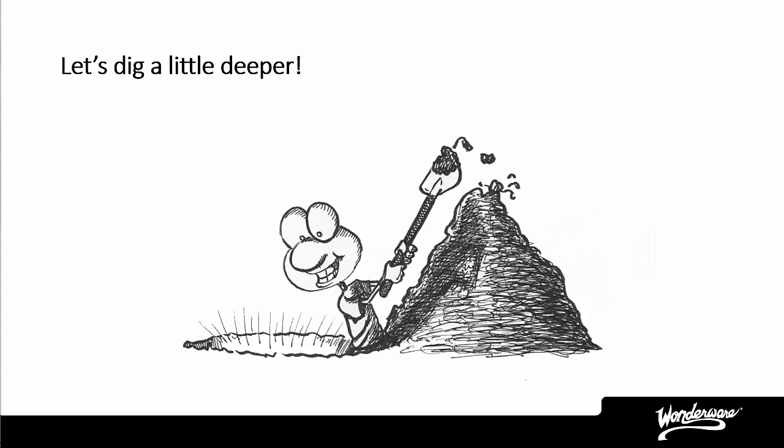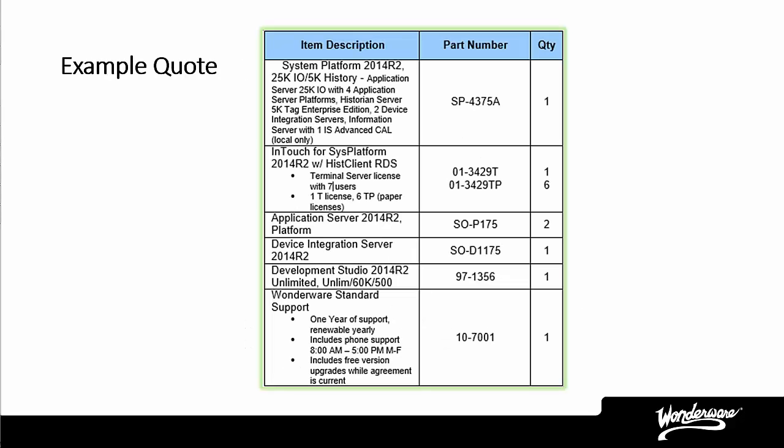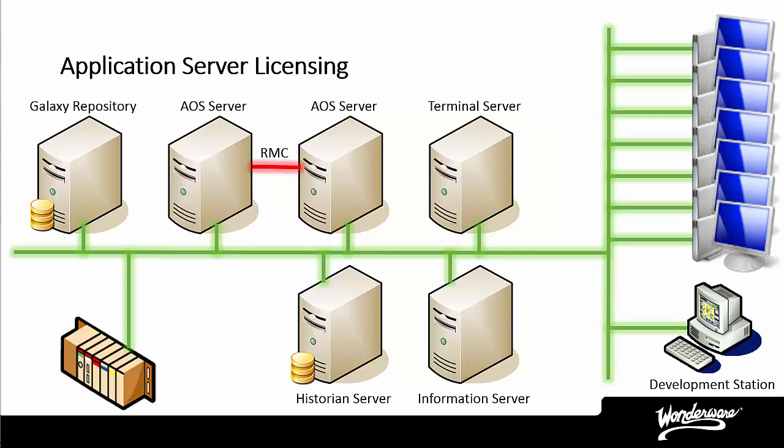Now that we have a basic understanding of what the Wonderware System Platform is, let's dig a little deeper into the licensing. Here's an example list of Wonderware products and part numbers you might find on a quote. We will be discussing each line in the quote and how the values are determined. Here's the architecture for the system that goes along with the example quote.